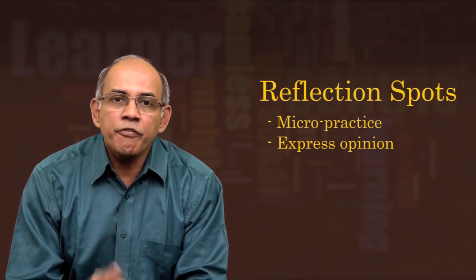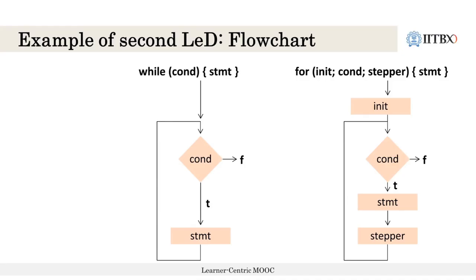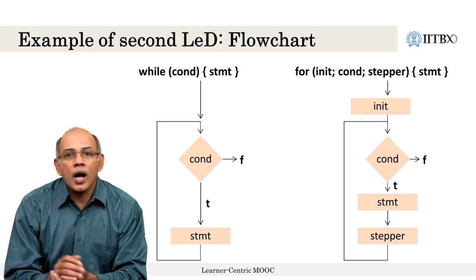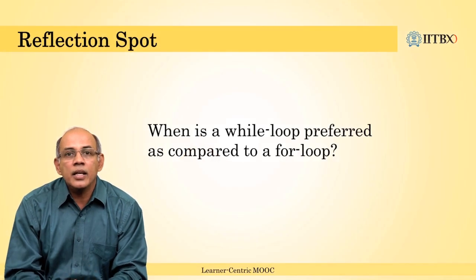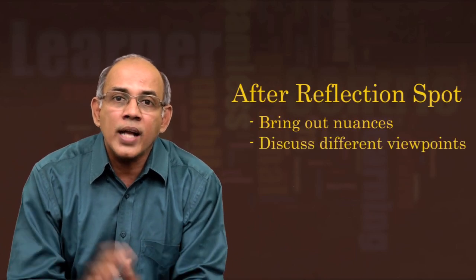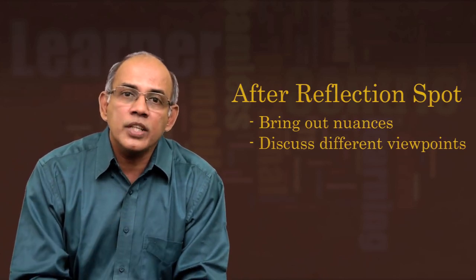For example, considering the CS101 topic of comparing a for loop and a while loop, one reflection spot could be to ask the learner when a while loop is preferred compared to a for loop. Different learners would have different answers. Even though both loops can be used interchangeably to a large extent, this brings the opportunity for the instructor to highlight the different nuances in the content that follows the reflection spot.